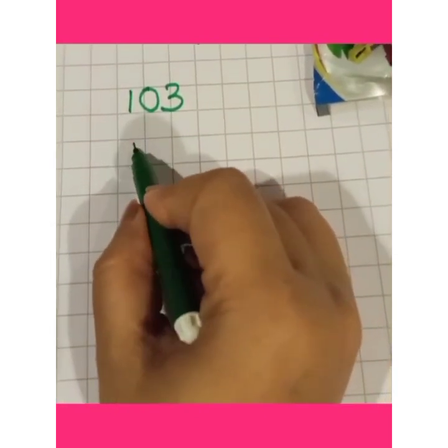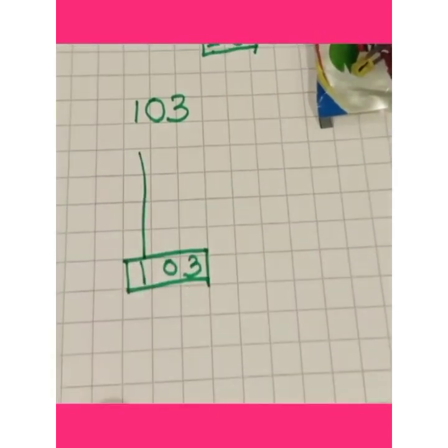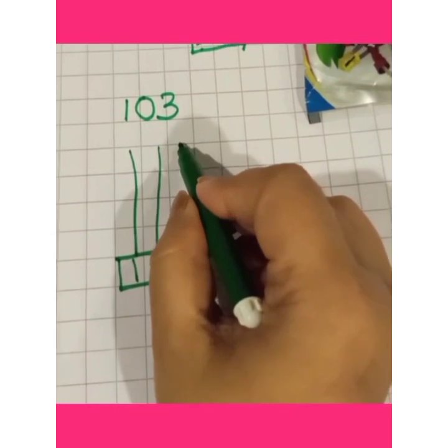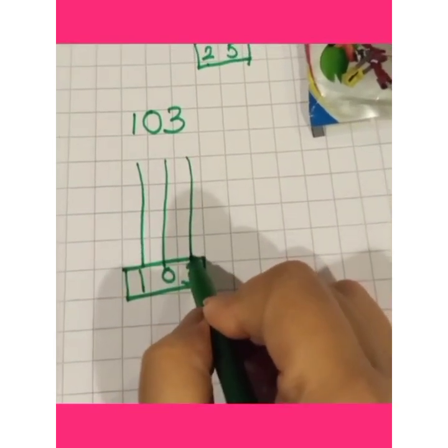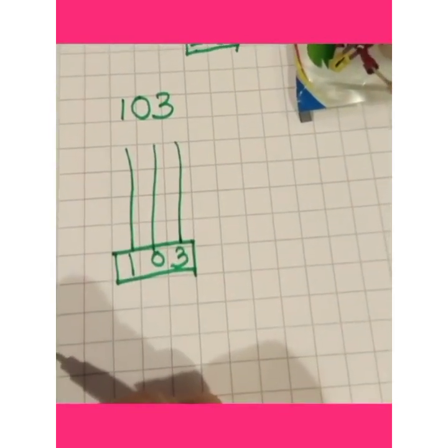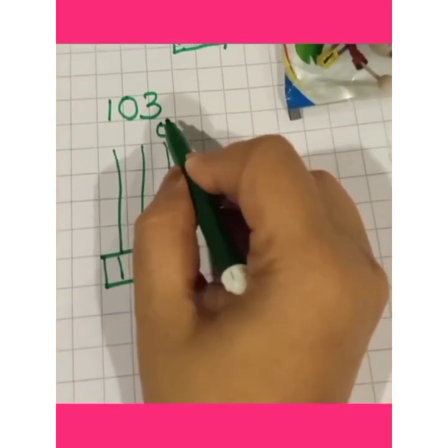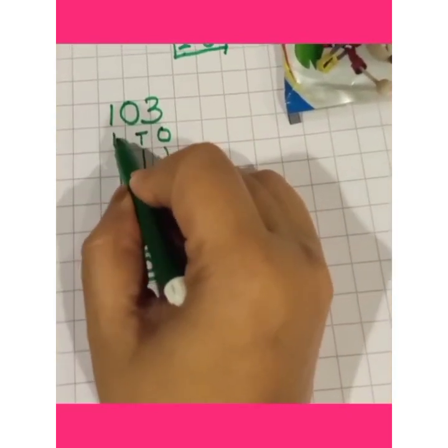So draw 3 spikes. Above 1, above 0, and above 3. Children, you will use scale to draw the spikes. Now 3 digit numbers. So write 3 places. O, T, H.